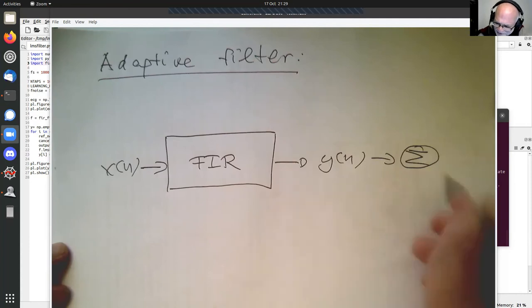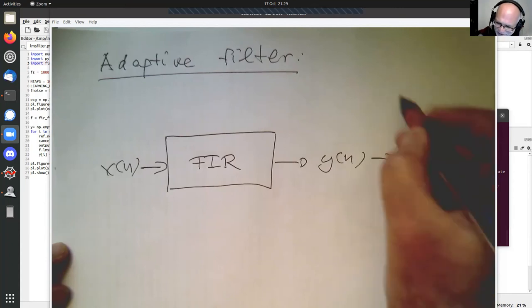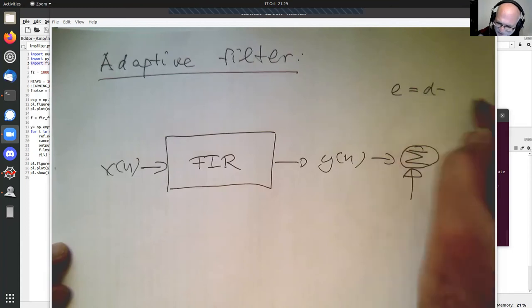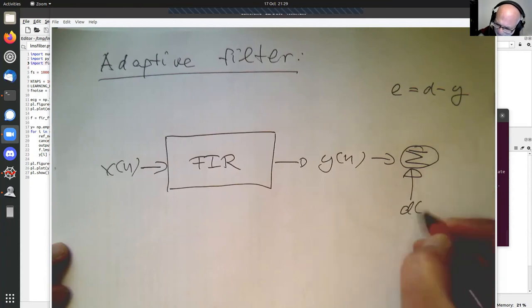And so now what we're doing is here. So remember the definition I had here is E equals D minus Y. So our error signal. So we have here our D of N.